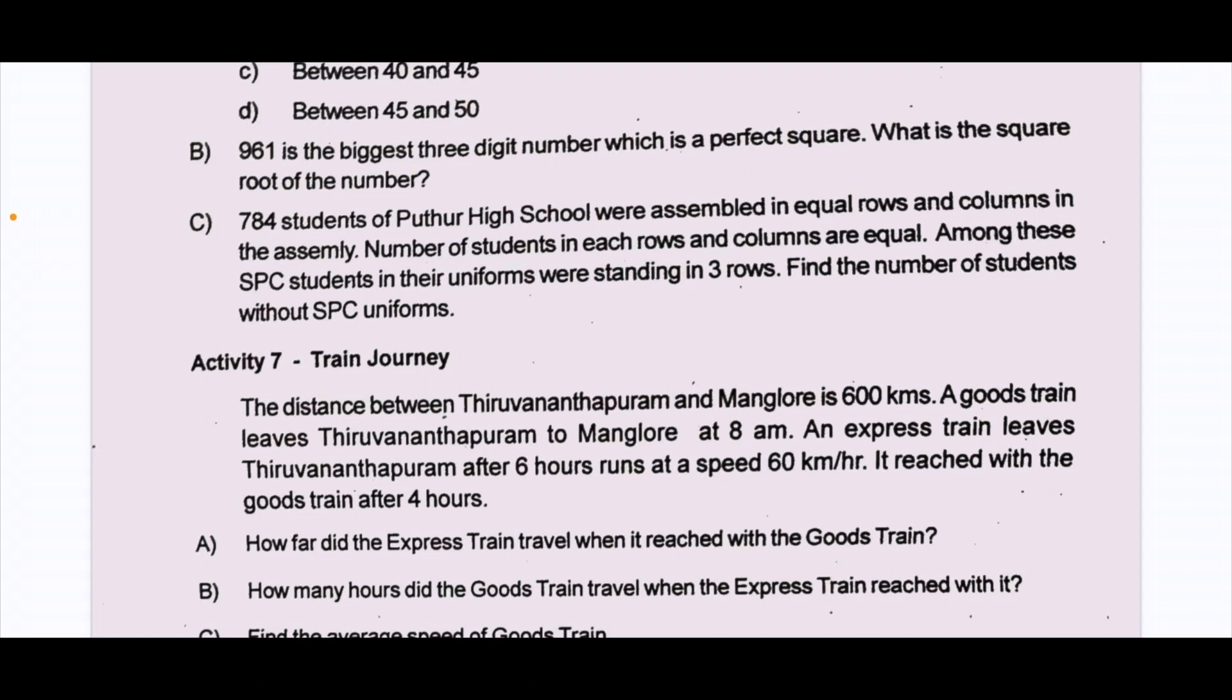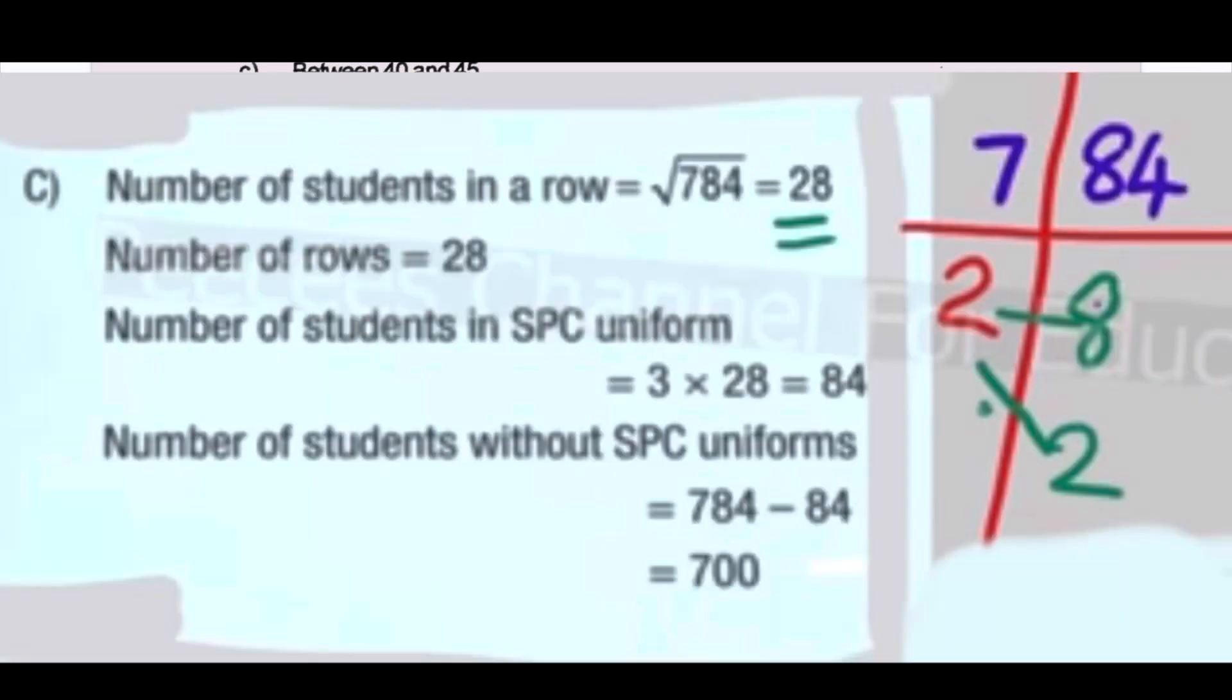Part C: 784 students of Puthur High School were assembled in equal rows and columns in the assembly. Number of students in each row and column are equal. Among these, SPC students in their uniforms were standing in 3 rows. Find the number of students without SPC uniforms.